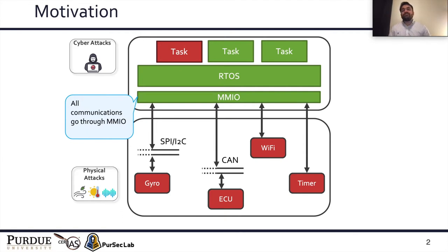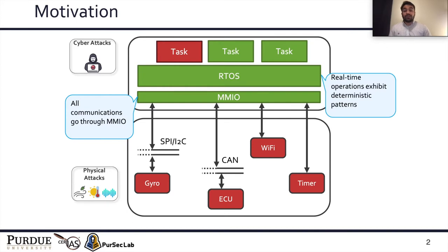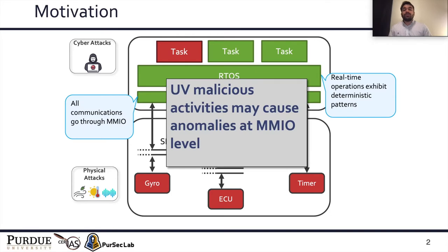Furthermore, since these systems have to interface with physical systems, they have to be real-time in nature. Here, real-time doesn't mean real fast — it actually means deterministic. And because of this determinism, we conjecture that any malicious activities may cause anomalies at the MMIO level.